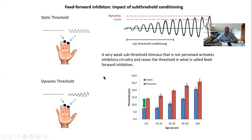That's because your brain circuitry is turning things off. When the stimulus is sub-threshold, this is all sub-threshold conditioning — it's actually turning on inhibition in the brain. And that is called feed-forward inhibition.